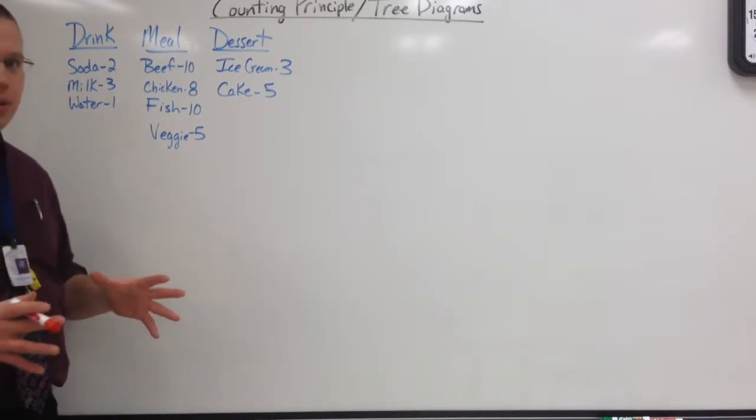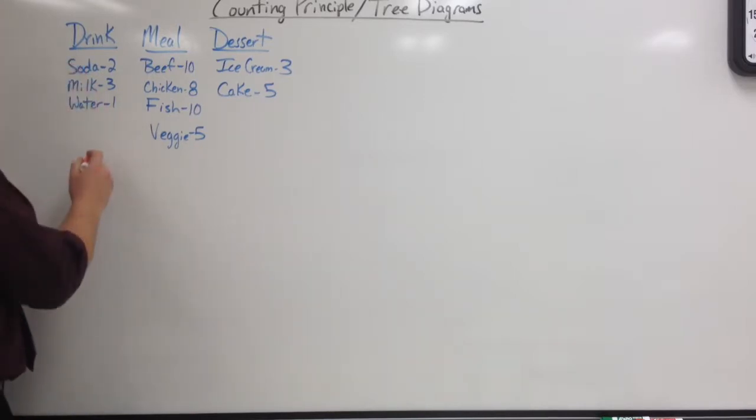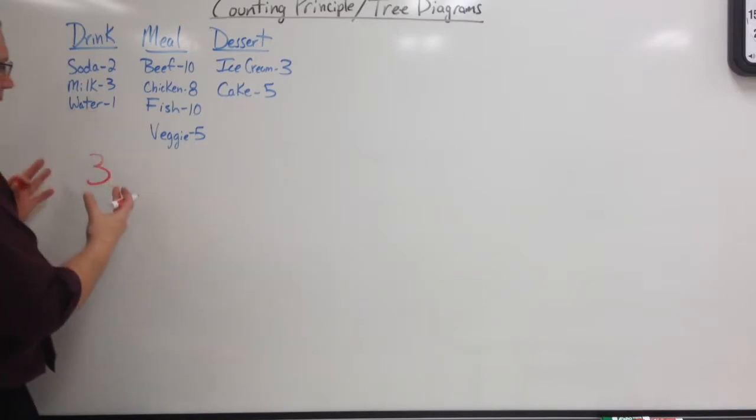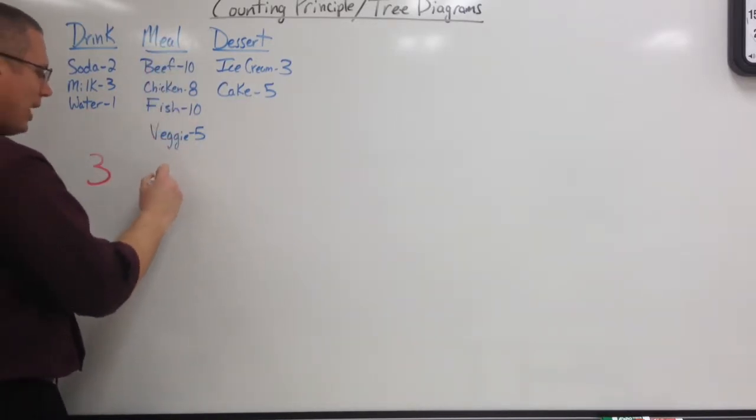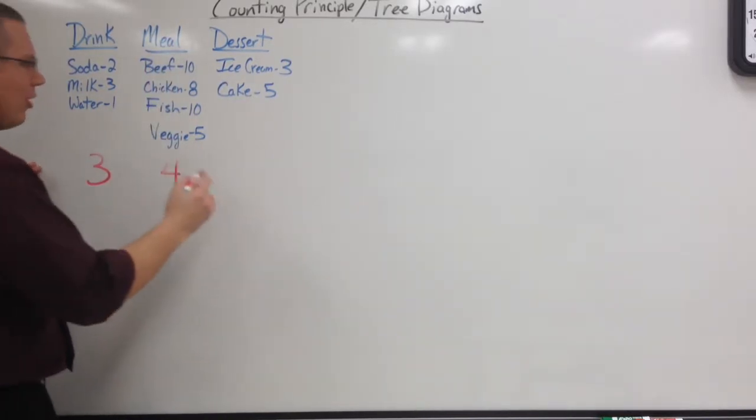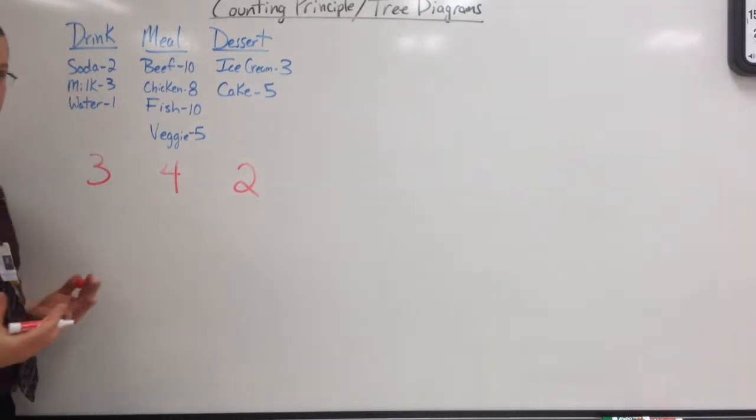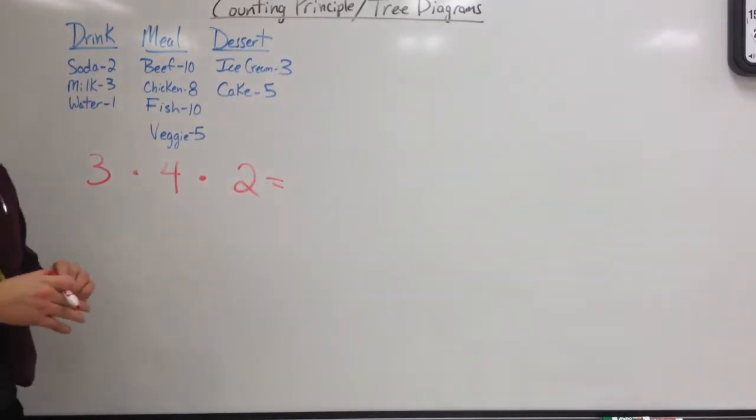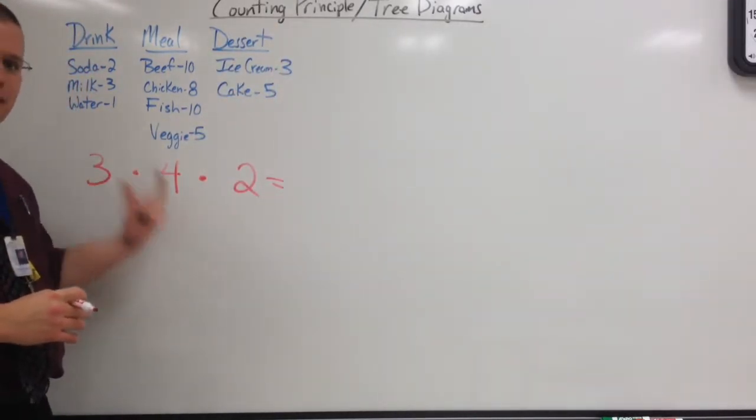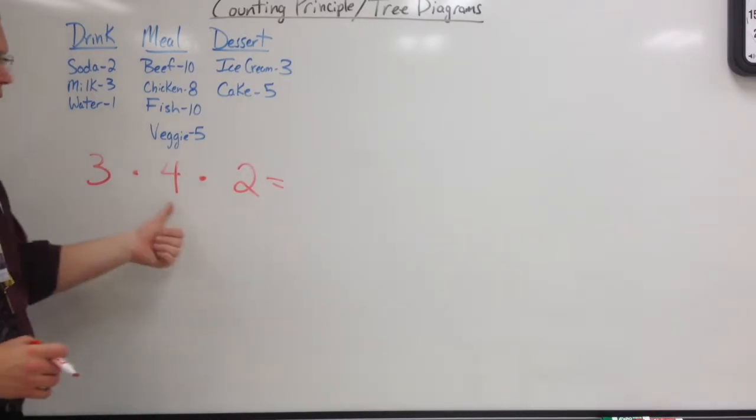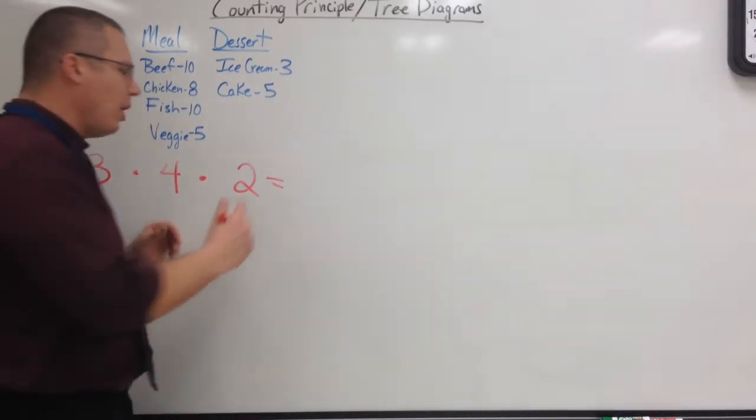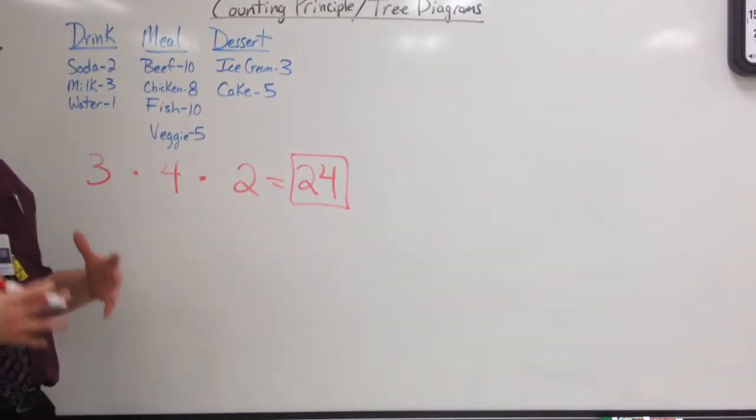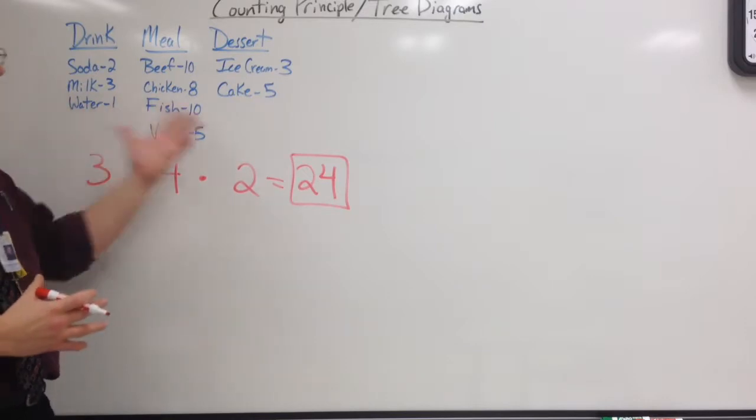The counting principle is the fastest way to go through and do this. I have three of my first event or three options in my first category, my second category I have four, my third category I have two. Fastest way: multiply. That is the counting principle. The fundamental counting principle is to take how many of each category you have, multiply them together. Three times four is 12, times two is 24. There's 24 different possible meal setups you can have using this.